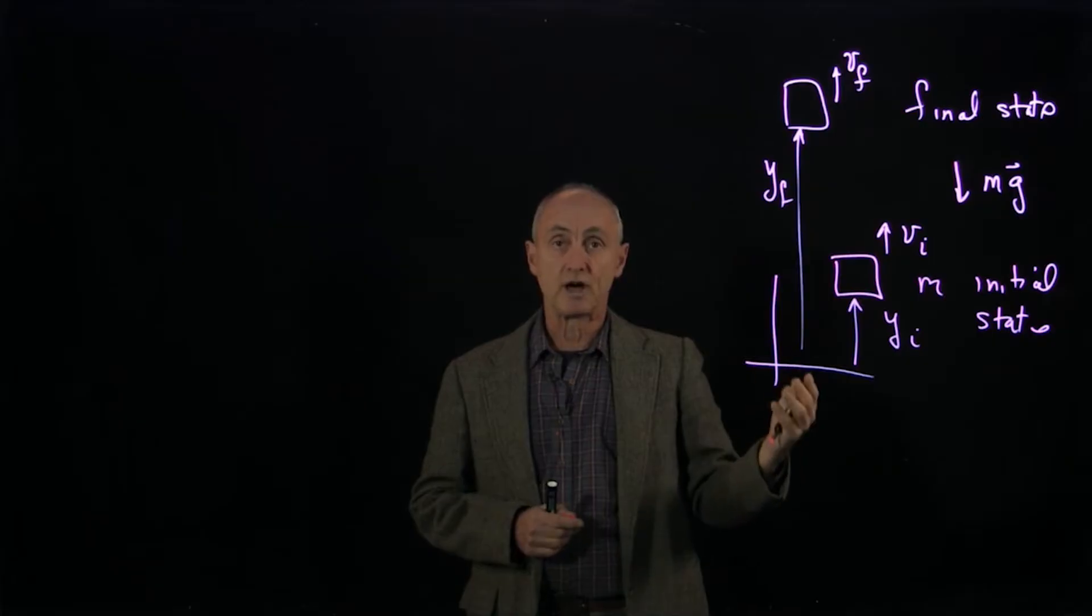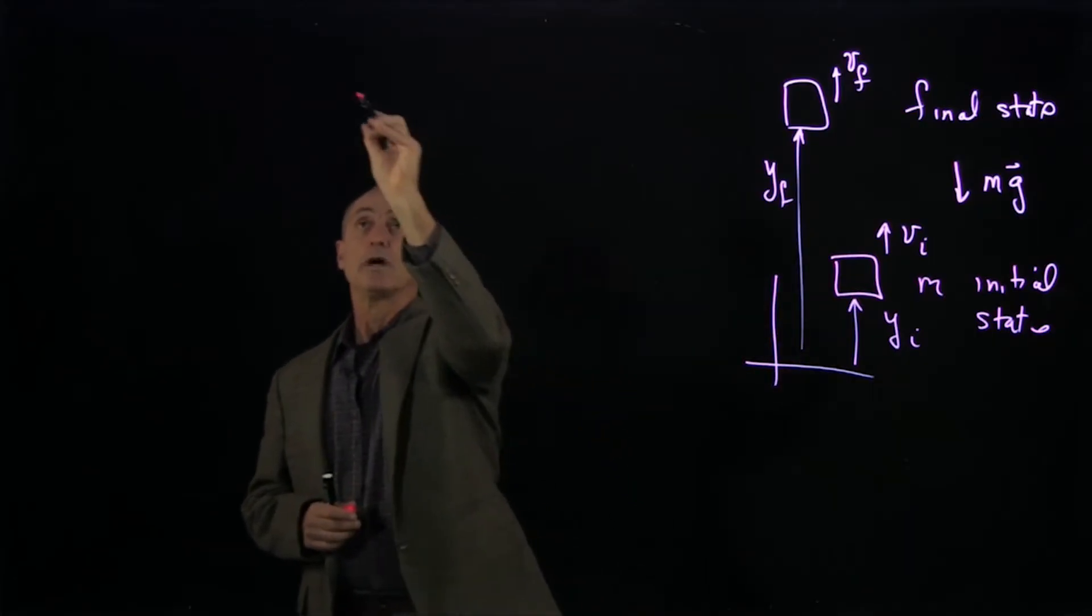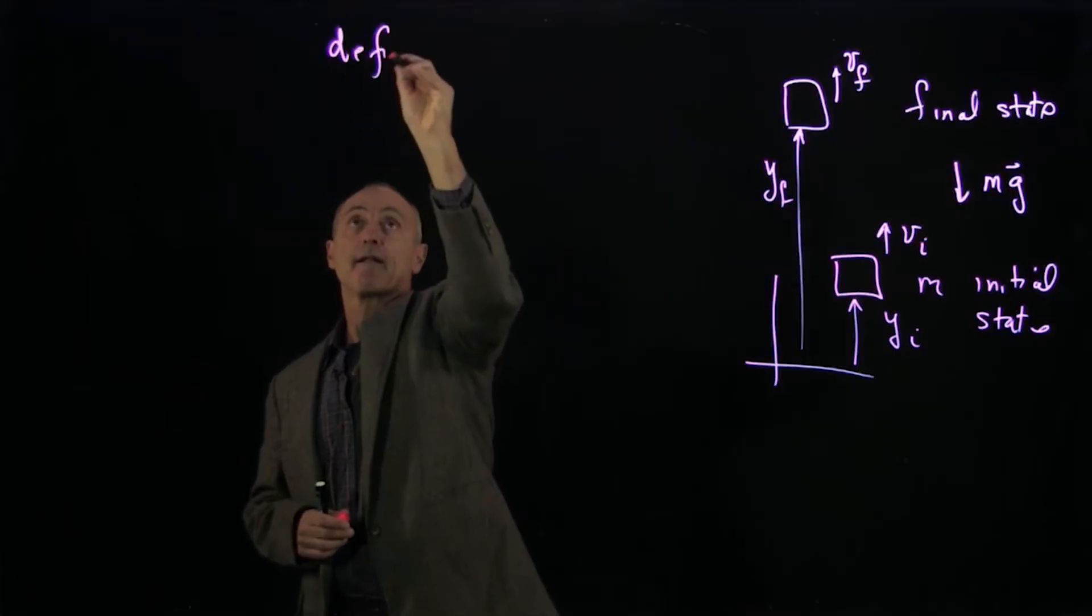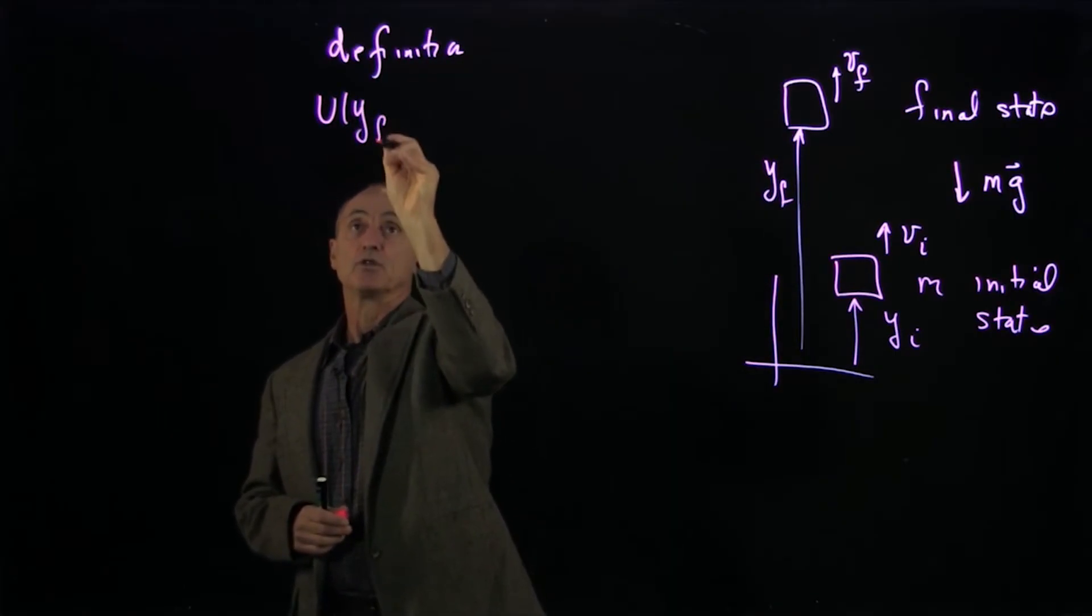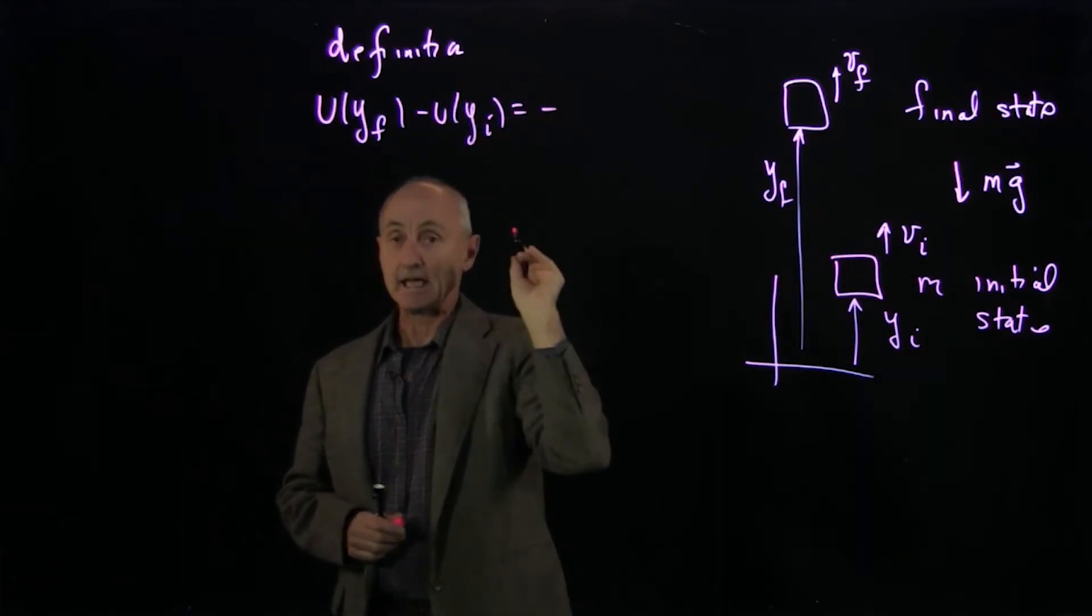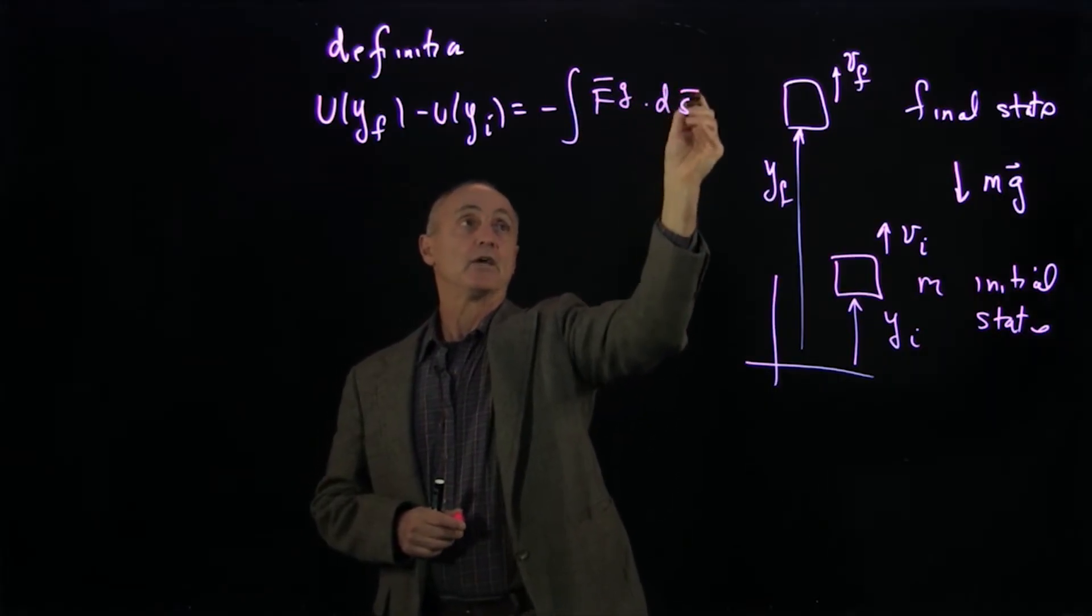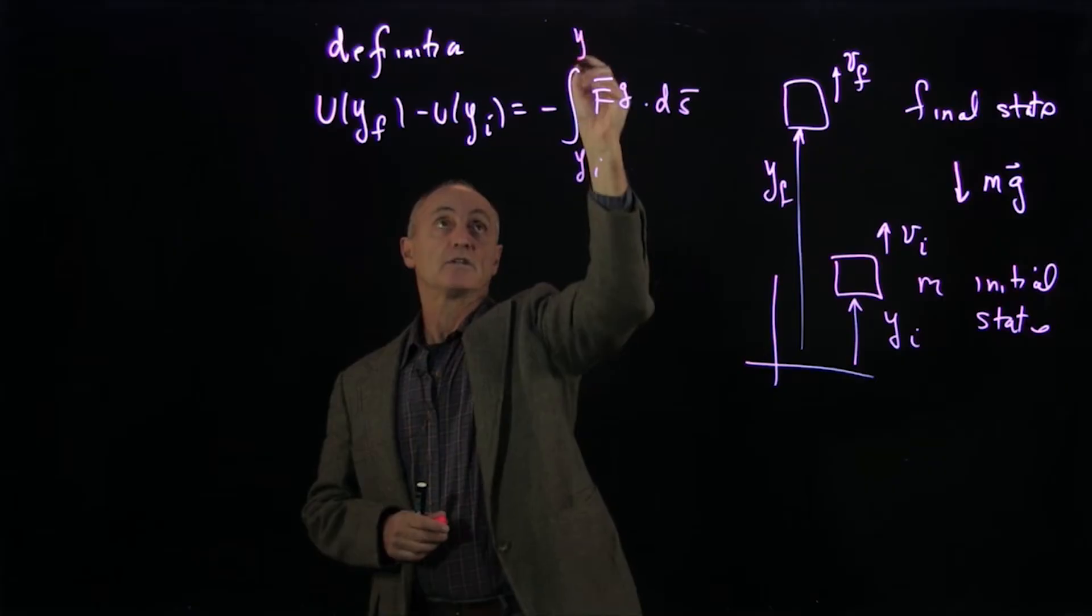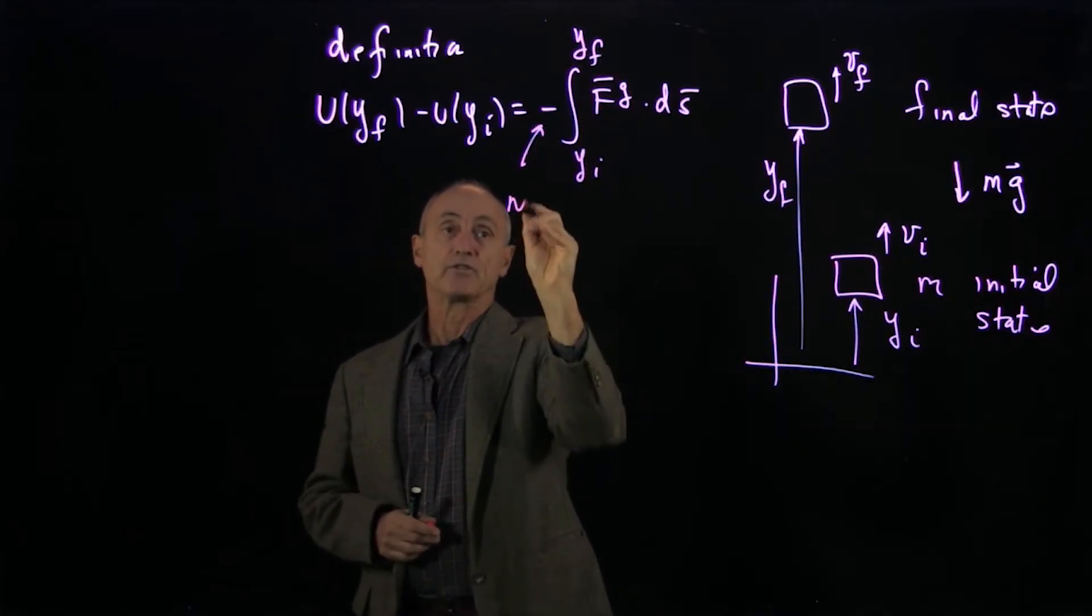So what I'd like to do is define a potential energy difference in the following way. So as a definition, the potential energy difference between these two points is given by the negative of the work done by the gravitational force in going from the initial state to the final state. Notice this negative sign.